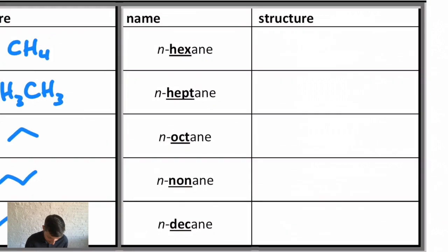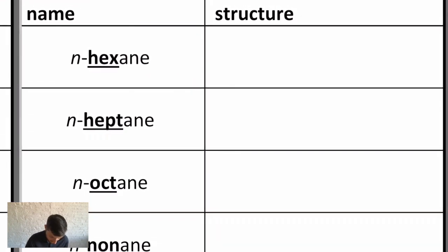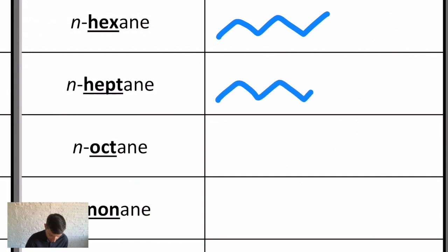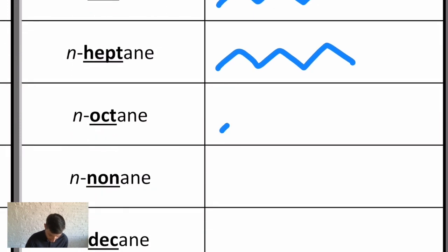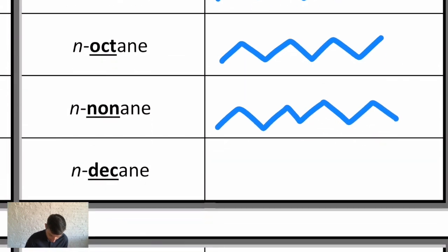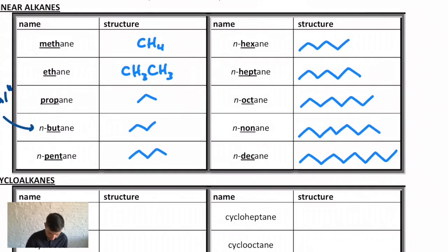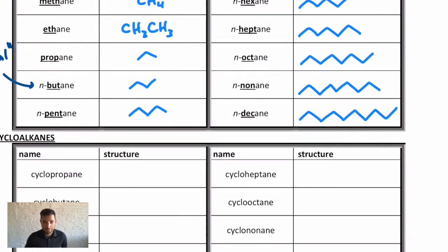Continuing with our notes here, hexane is six carbons: 2, 4, 6. Heptane would be seven: 2, 4, 6, and 7. Octane is eight: 4, 6, 8. Nine is nine: 8 and 9. And then decane is ten: 4, 6, 8, and 10. That's it—those are your simple unbranched, acyclic, linear alkanes.